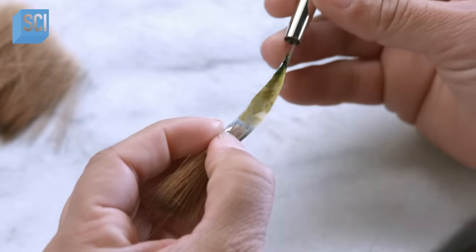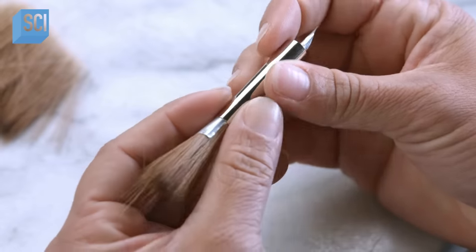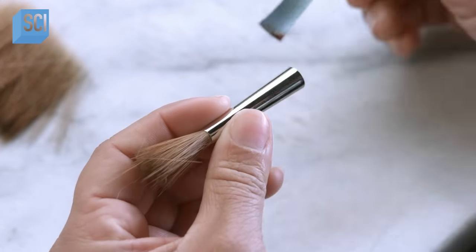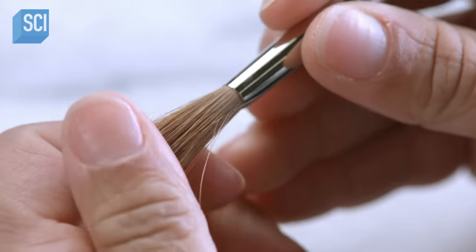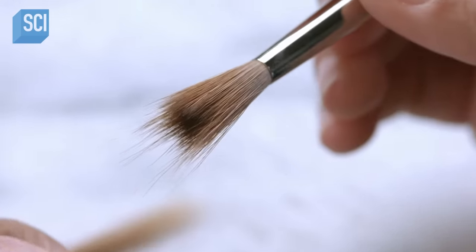She inserts the hairs into a metal band called a ferrule made of nickel-plated brass. She feels how they fit in the ferrule. If the fit's too tight, she removes some hairs. If it's too loose, she adds some.